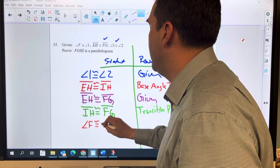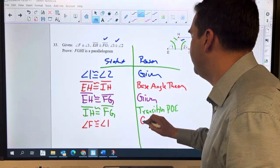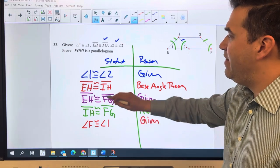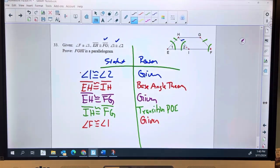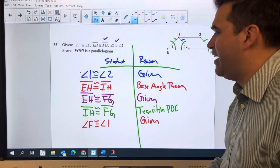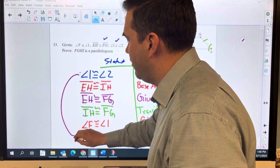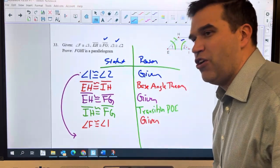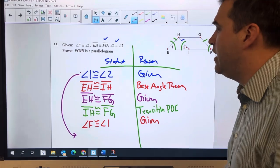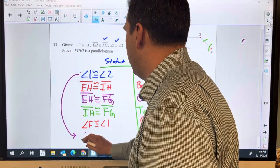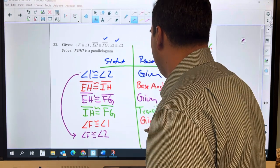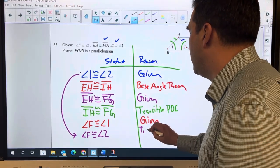Angle F is congruent to angle 1, given, and then based on the other given, so this is kind of requiring me to go back in time. So maybe I draw myself a little arrow here just to show where that reasoning is coming from, since it's not immediately above. Angle F is congruent to angle 2, again, transitive or substitution.